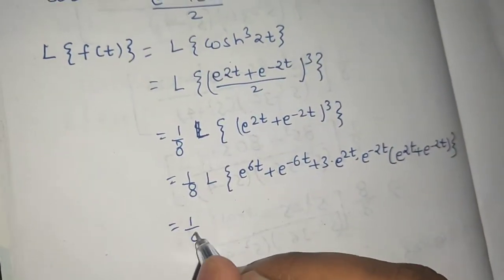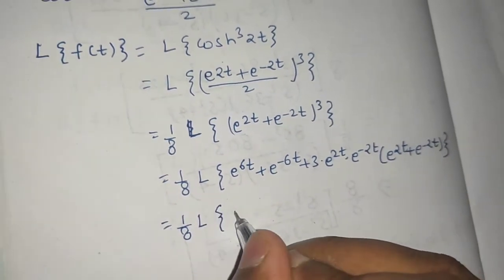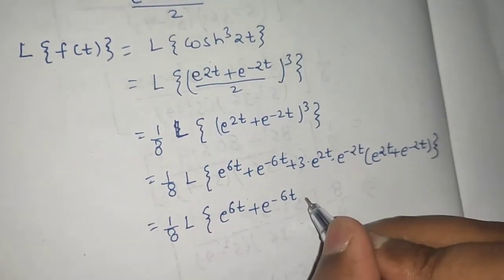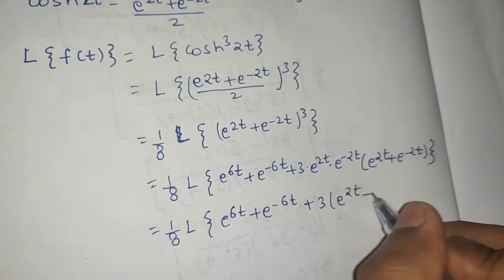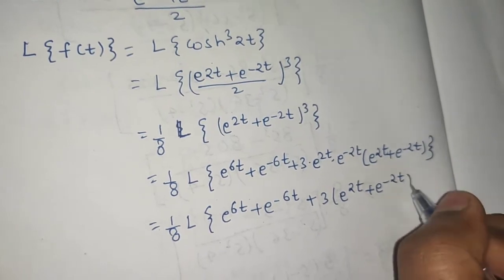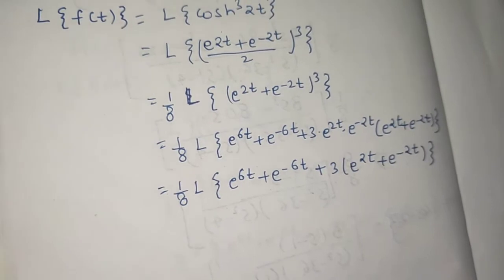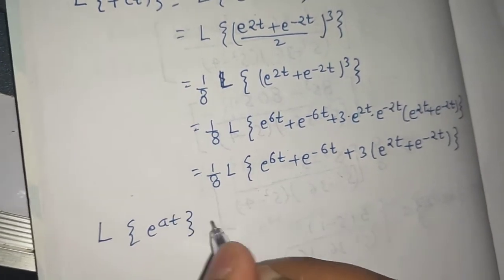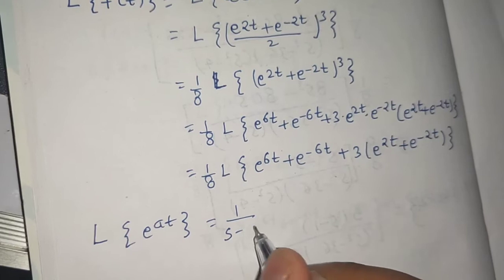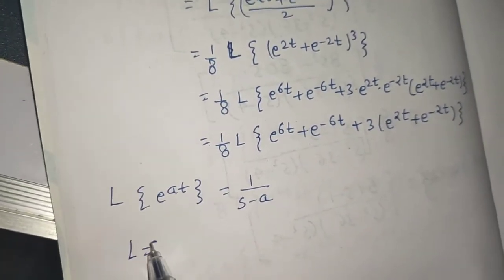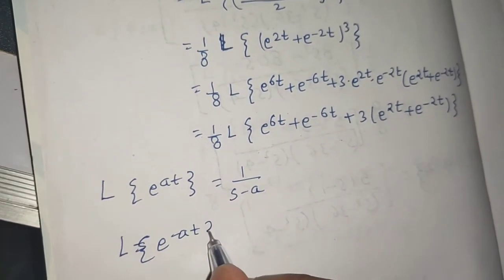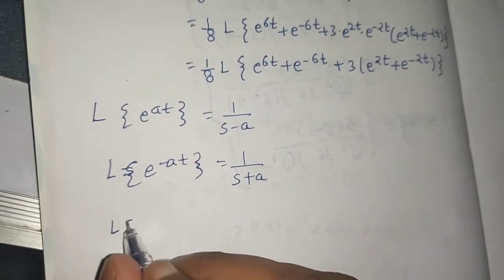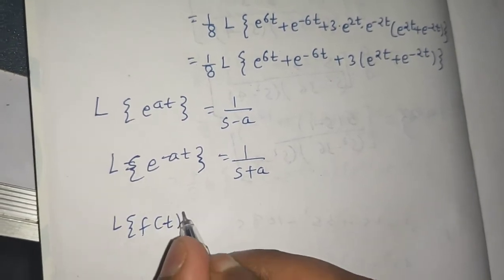Now we can use the standard formulas: the Laplace of e power at is 1 upon s minus a, and the Laplace of e power minus at is 1 upon s plus a.